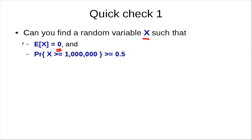That is, E[X] = 0 and Pr(X ≥ 1,000,000) ≥ 0.5. I'll wait a few seconds so you can try to define this discrete random variable X.